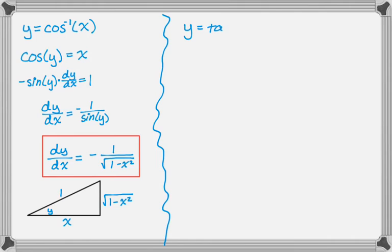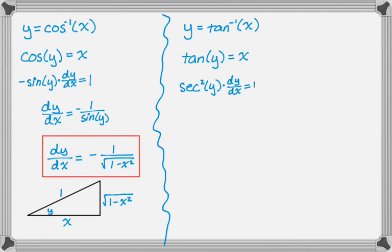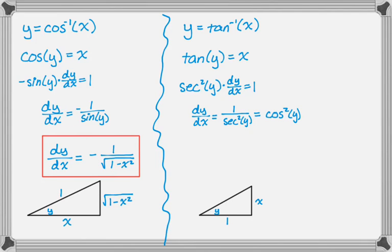Now let's do inverse tangent. So y equals tan inverse of x. We take the inverse of both sides: tan of y equals x. Taking the derivative with respect to x gives secant squared of y times dy/dx equals 1. So dy/dx is 1 over secant squared of y, or equivalently cosine squared of y. Drawing a triangle where tangent of y is x — so opposite is x, adjacent is 1 — the missing side is √(1 + x²) by the Pythagorean theorem. Cosine in this triangle is 1 over √(1 + x²), and since dy/dx is cosine squared, dy/dx equals 1 over (1 + x²).